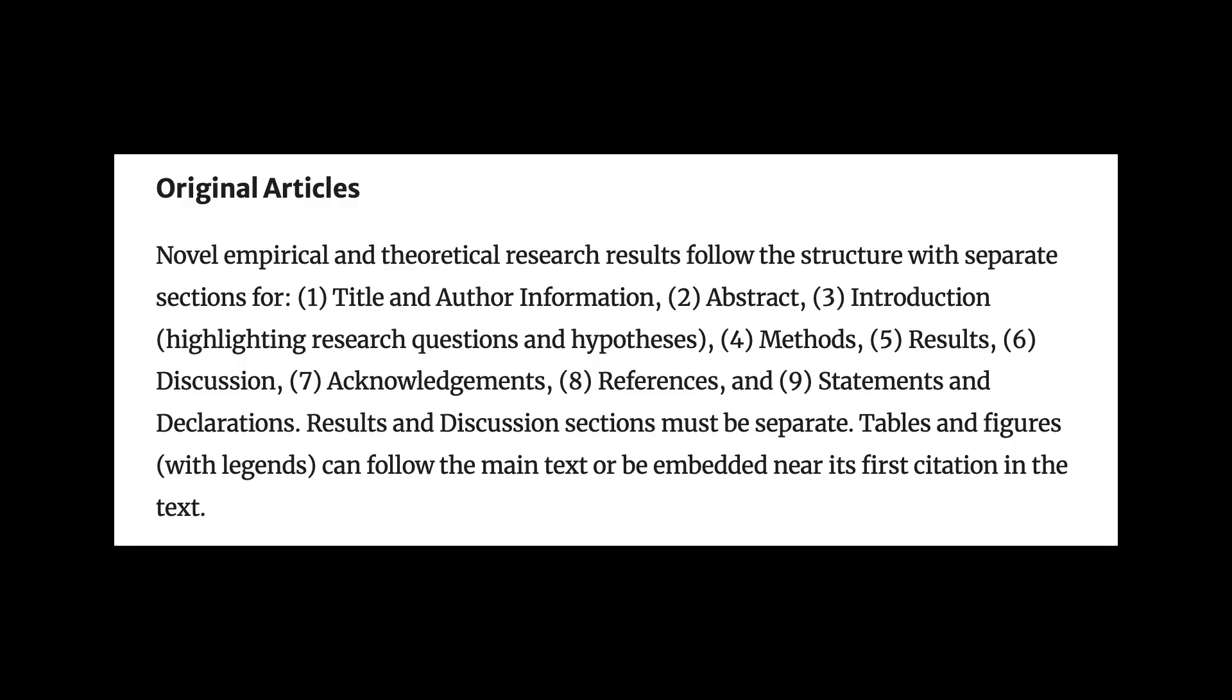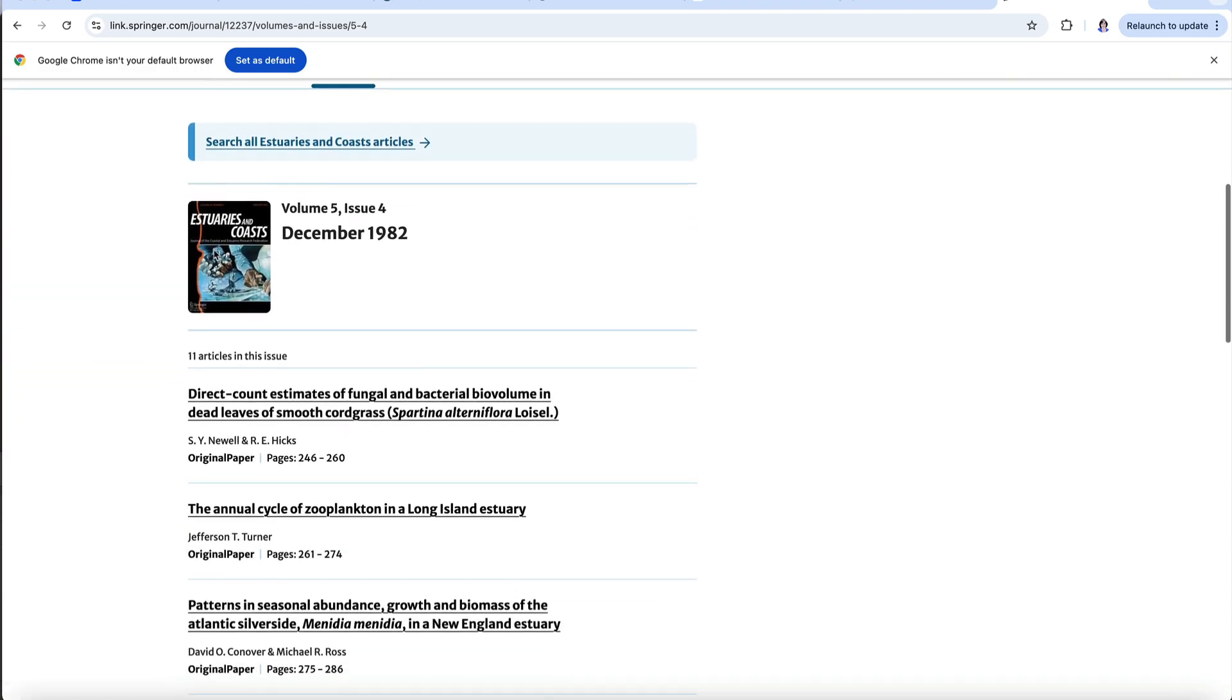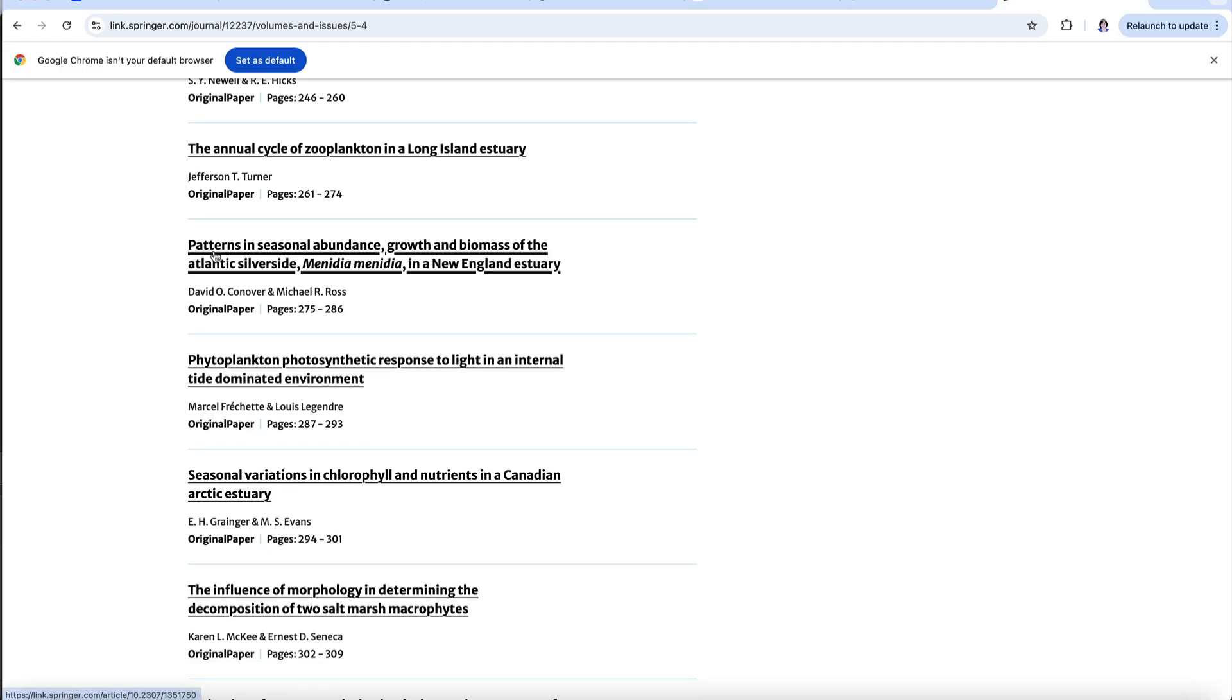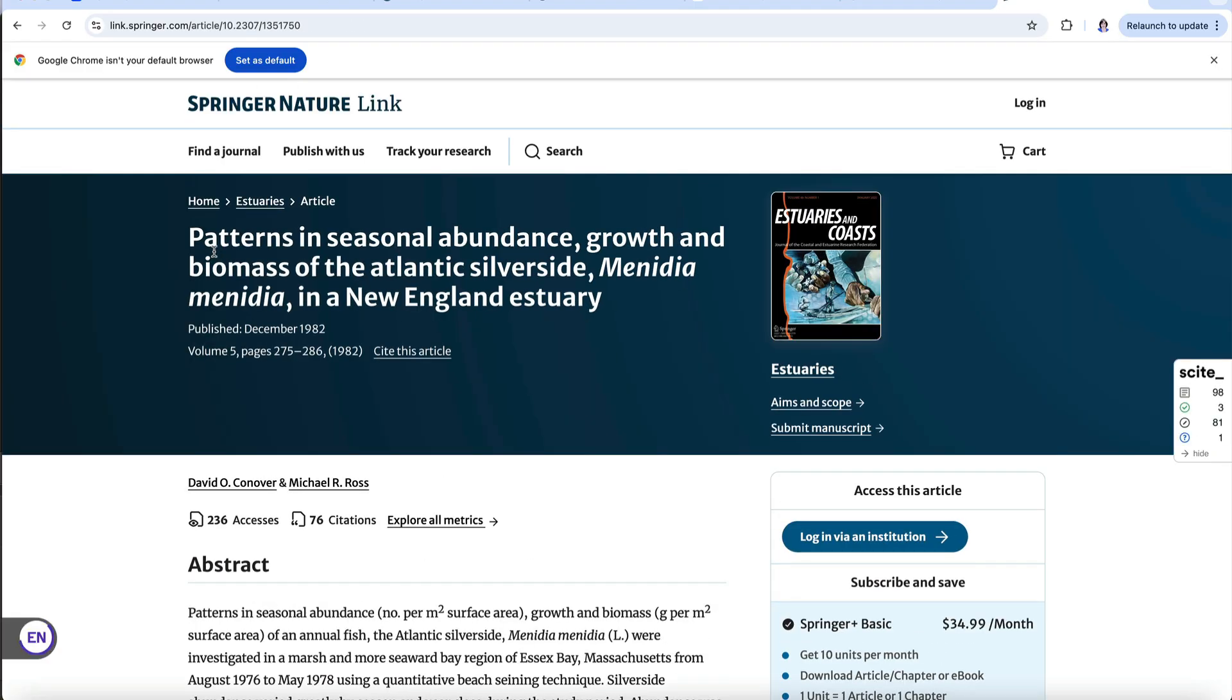Once you've identified a target journal, prepare a template or outline using the target journal formatting guidelines. It's a good idea to read several papers from your target journal to get a general idea of their length and how they are structured.